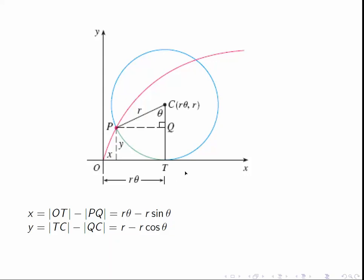Since this is a basic fact of geometry, we'll just assume that and continue. Now we know that OT is R theta. But this distance X here, of course, is not OT. It's OT minus PQ.